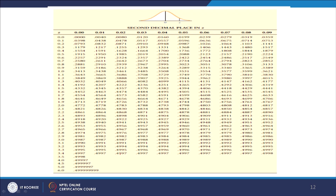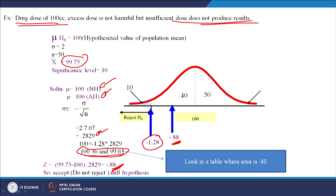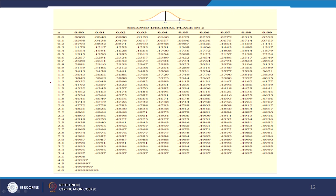Since this is a one-tail test and alpha is equal to 0.10, from the 50% area we are interested in the value at 50 minus 10, which is 0.40. Look at the Z table where the area is 0.40 — that area corresponds to Z equal to 1.28. So 1.2 and 0.08 gives us 0.40.